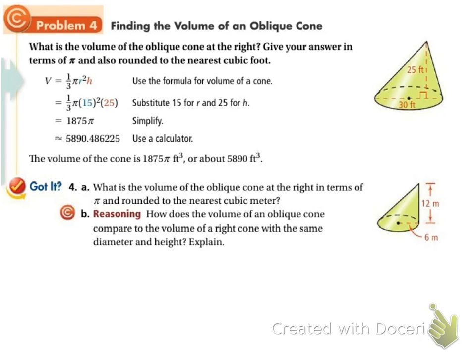Here's an oblique cone. If you look at theirs up here, you can see that the height is still inside, it's perpendicular. In our case, the height ends up being right here, because it's perpendicular there. So it looks a little bit different, but still the same deal.